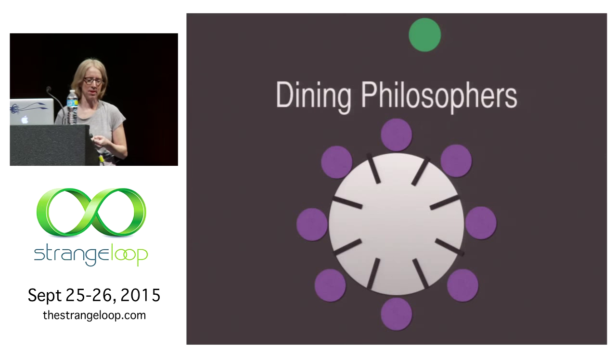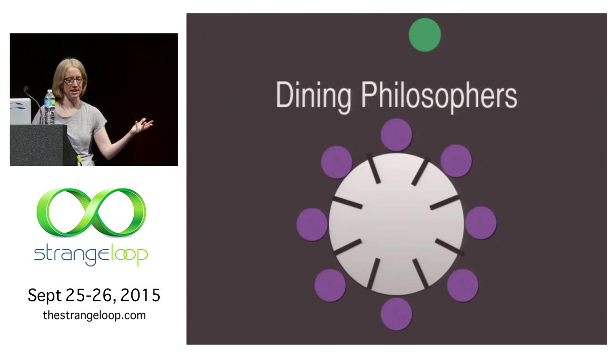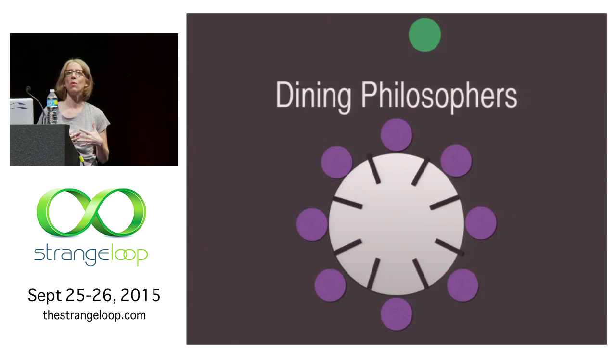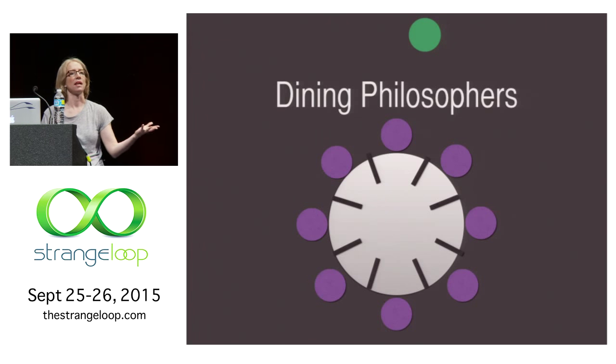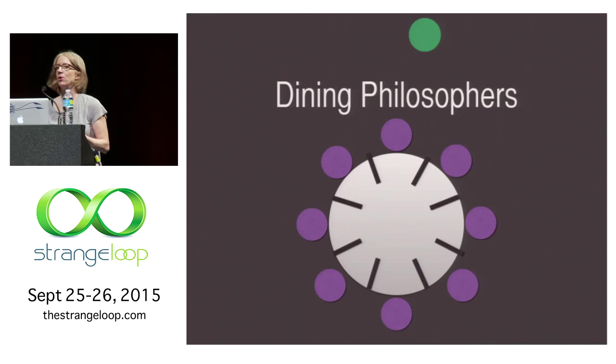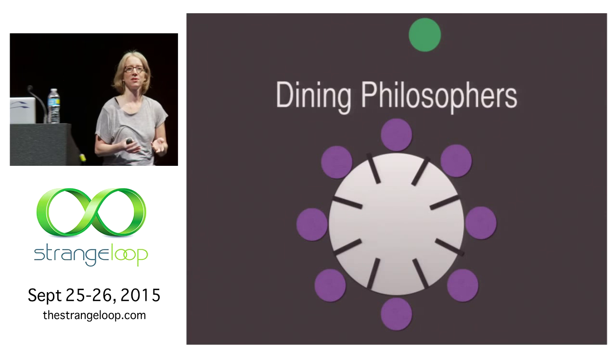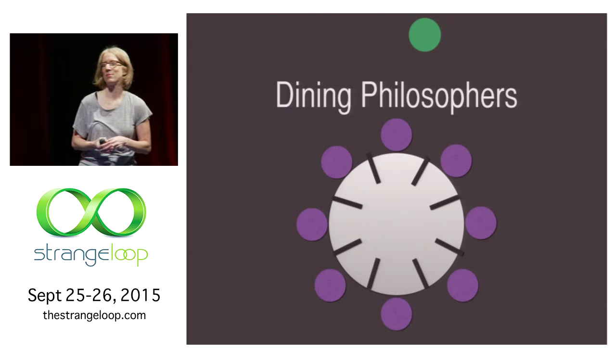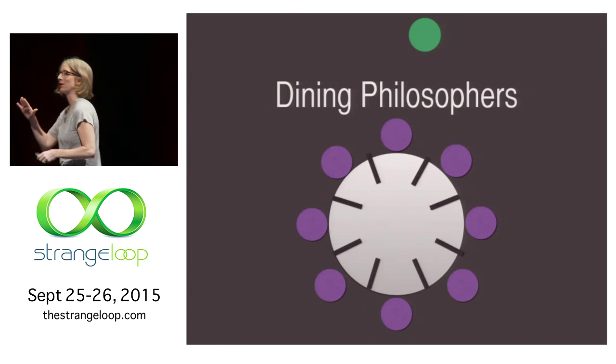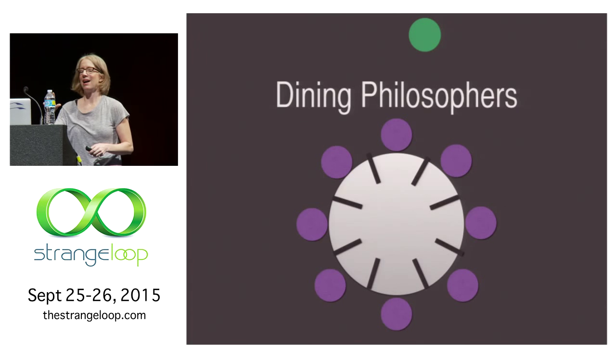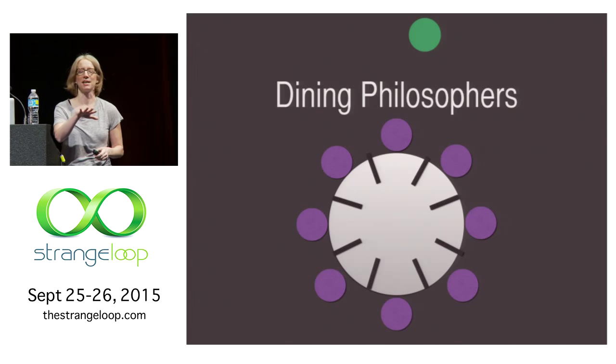A typical problem for concurrency, which chemical programming can handle quite well, is something like the dining philosophers problem. Who here has heard of the dining philosophers? Okay, great. A lot of people. Another question for you. For people who haven't heard the dining philosophers problem, so these little circles all around the table, they're supposed to be philosophers, but I can't draw.